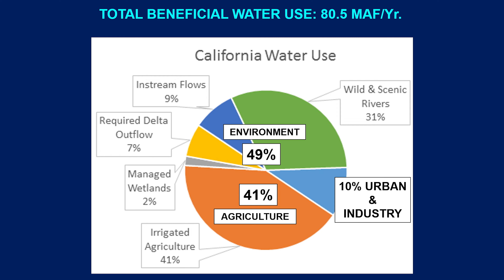SGMA adds restrictions to water availability on top of climate constraints. The Public Policy Institute of California recently released a policy brief on the future of agriculture in San Joaquin Valley, stating that by 2040, average annual water supply could decline by 20%, constrained chiefly by the transition to groundwater sustainability under SGMA, but exacerbated by climate change and environmental regulation.